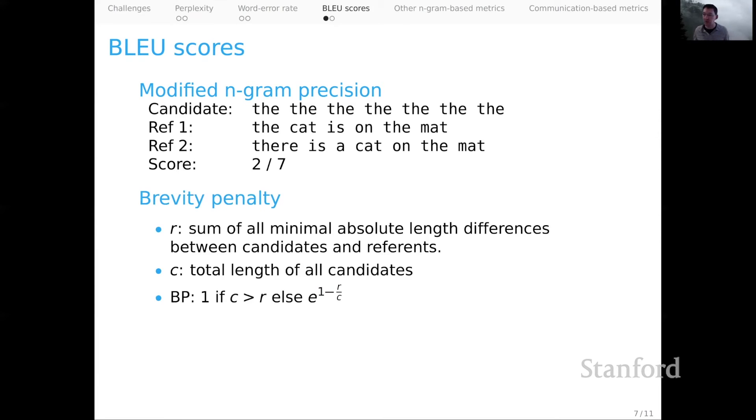There's also a brevity penalty, which will play the role of something like recall in the BLEU scoring. So we have a quantity R, which is the sum of all the minimal absolute length differences between candidates and reference. We have C, which is the total length of all the candidates. And then we said that the brevity penalty is one if C is greater than R, otherwise it's an exponential decay off of the ratio of R and C. And again, that will play kind of the notion of recall.